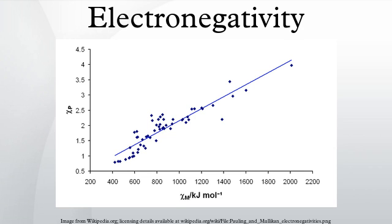Group electronegativity: In organic chemistry, electronegativity is associated more with different functional groups than with individual atoms. The terms group electronegativity and substituent electronegativity are used synonymously. However, it is common to distinguish between the inductive effect and the resonance effect, which might be described as σ- and π-electronegativities, respectively. There are a number of linear free energy relationships used to quantify these effects, of which the Hammett equation is the best known. Kabachnik parameters are group electronegativities for use in organophosphorus chemistry.